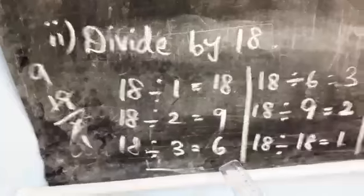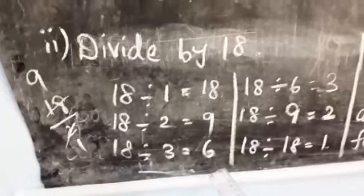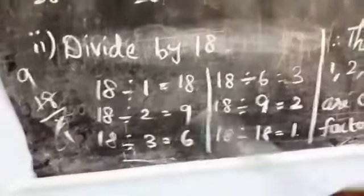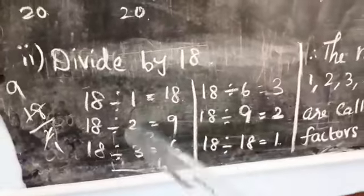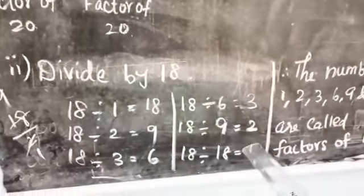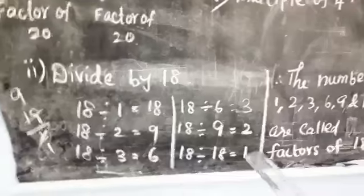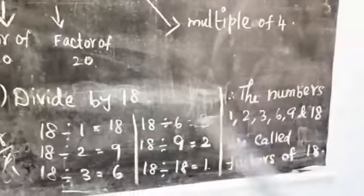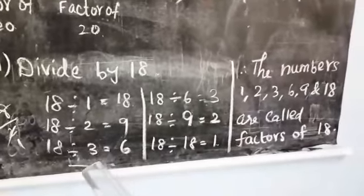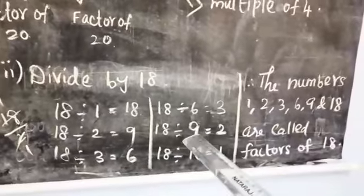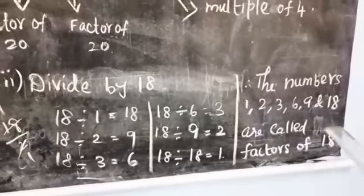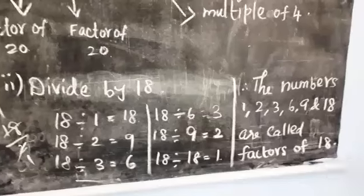18 divided by 3 is 6. 18 divided by 6 is 3. 18 divided by 9 is 2. 18 divided by 18 is 1. So the numbers 1, 2, 3, 6, 9, and 18 are all the factors of 18.